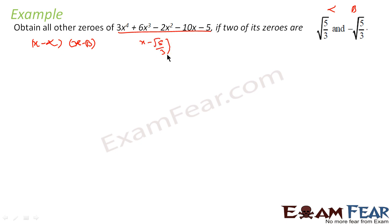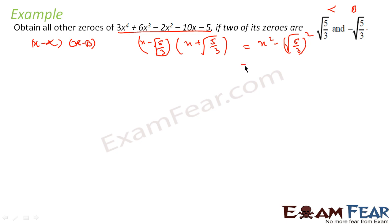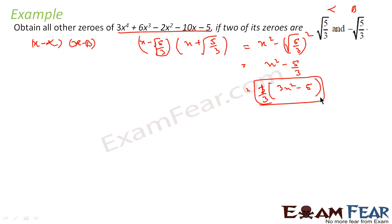(x − alpha)(x − beta) is nothing but (x − √(5/3))(x + √(5/3)), which equals x² − (√(5/3))², that is x² − 5/3. We can write this as (1/3)(3x² − 5). So 3x² − 5 should divide the given polynomial, and whatever we get will also be a factor of it.